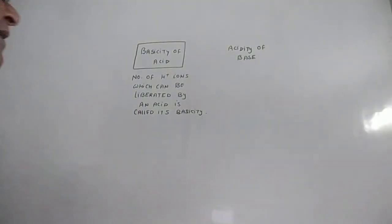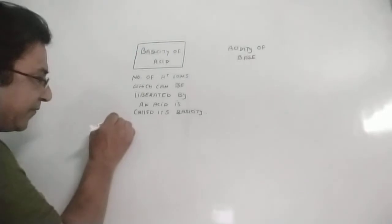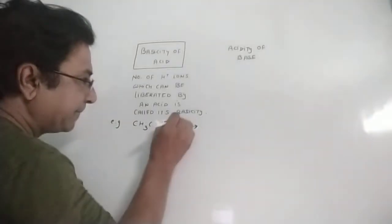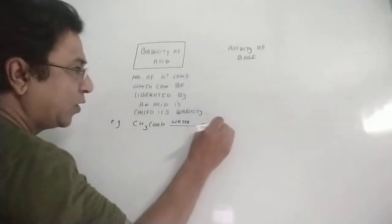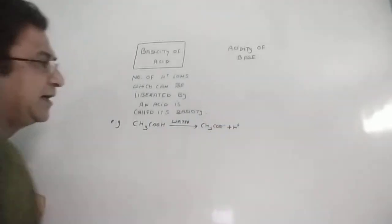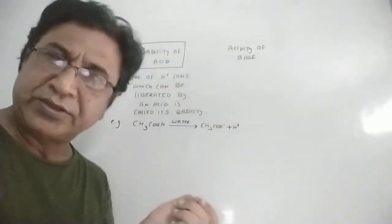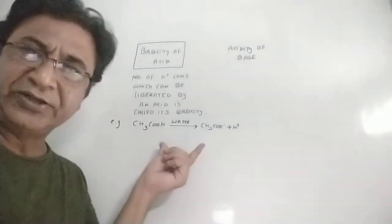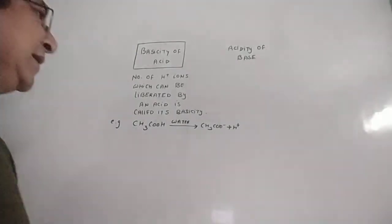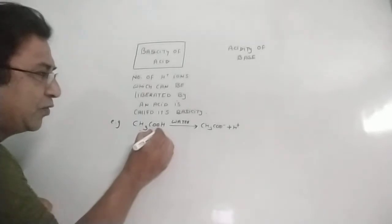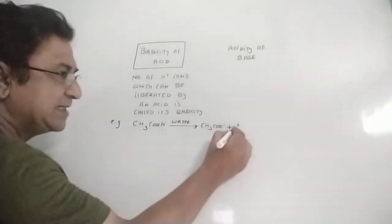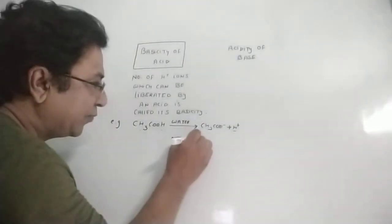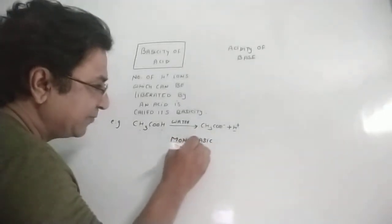For example, acetic acid (CH3COOH), when dissolved in water, produces only one hydrogen ion. Although there are four hydrogen atoms present in acetic acid, it liberates only one hydrogen ion. This means acetic acid is mono basic in nature — 'mono' meaning one.